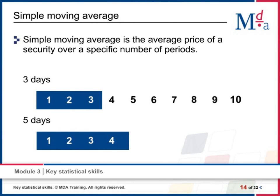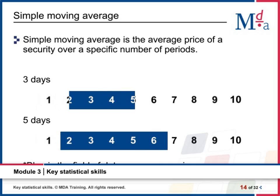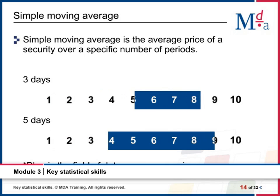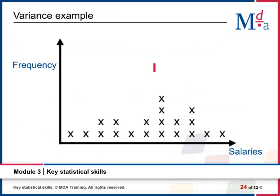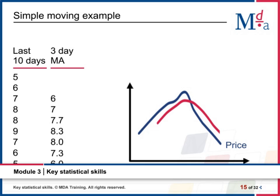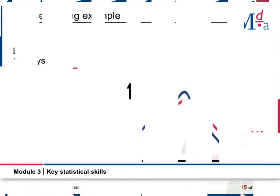Part three is an overview of measures of central tendency, including the mean, weighted averages, expected values and moving averages, as well as calculating and understanding both the variance and standard deviation for a set of data.